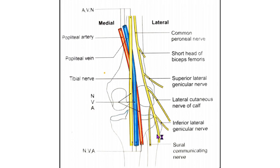The recurrent genicular nerve arises where the common peroneal nerve divides into superficial and deep peroneal nerves.